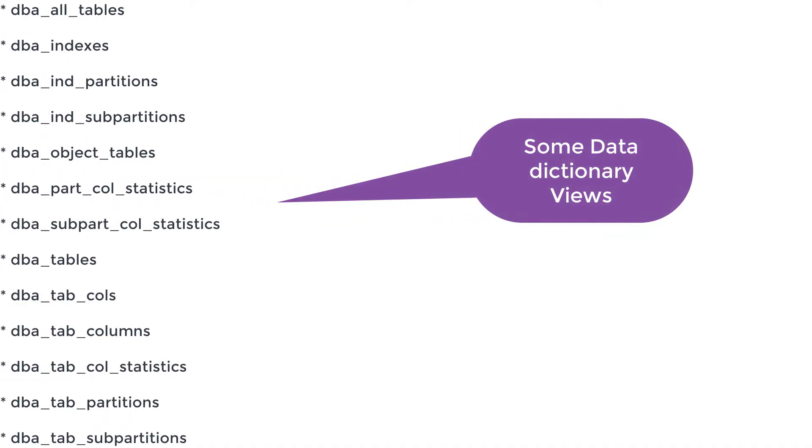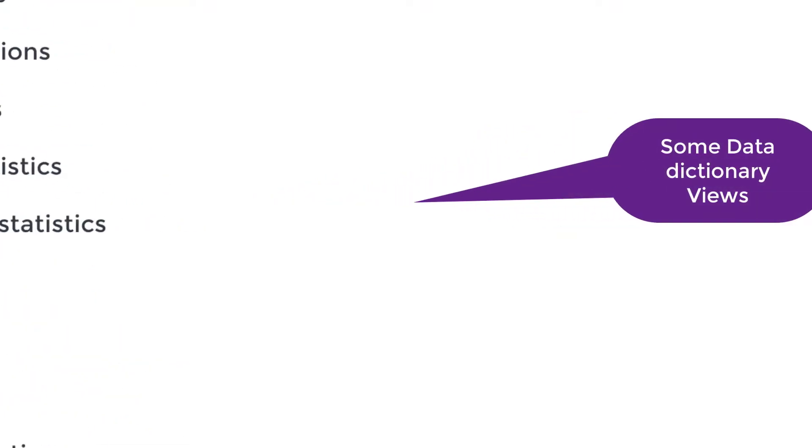Now, did we create this V$DATABASE view? No, we don't create it. So who created this view? This view has been created automatically when we do the Oracle database installation. Who is the owner of this data dictionary table like V$DATABASE? It is the SYS user. Oracle has created their own tables, but they don't want us to access those Oracle tables directly. So what they have done is created views for us. By using the SYS user you have the privileges to access their metadata tables like V$DATABASE to check the database status.